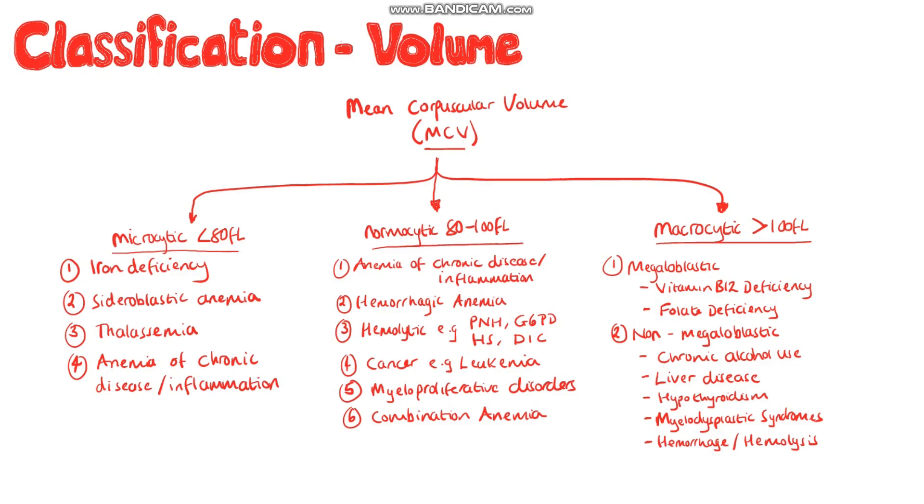Macrocytic anemia. We know that anemia can be divided based on the mean corpuscular volume of the red blood cells, and in macrocytic anemia, that value is going to be above 100 femtoliters. We also have the definition of anemia itself, which is a hemoglobin value less than 12 grams per deciliter in females, or less than 13.5 grams per deciliter in males.